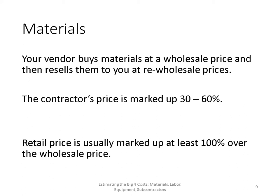As a contractor, you're typically paying 30 to 60% more than what the vendor buys the material for. The retail price is usually marked up at least 100% over wholesale. If you don't know your purchase price, you can call the company for a quote or check their website. You can take a retail price and make assumptions, knowing you'll be paying somewhere between 30 and 60% of the retail price.